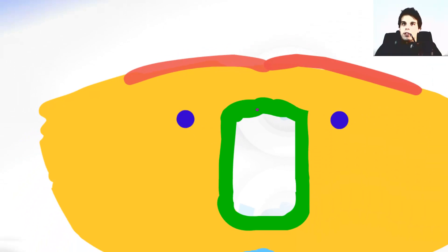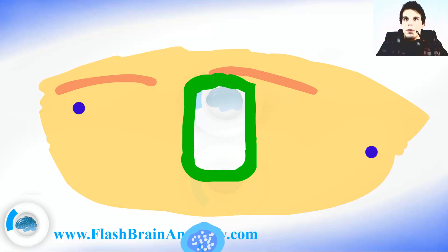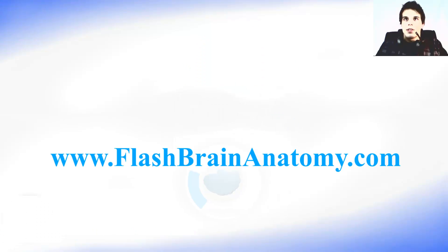The complete nervous system develops out of ectoderm. These cells over here are called the neuroepithelial cells. Those are the cells on the inside of the neural tube. Now let's look at the inner of the neural tube and how it's divided. This is how it looks like when we draw the more details.